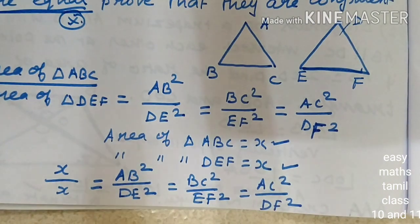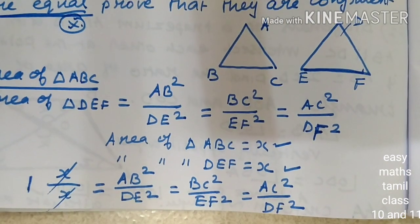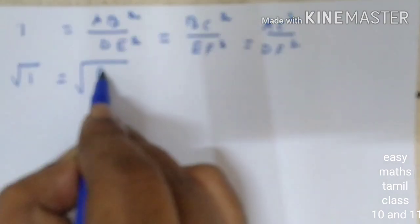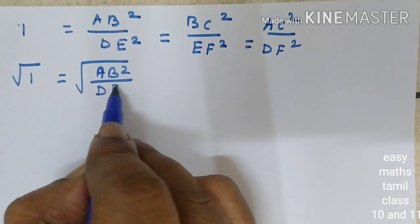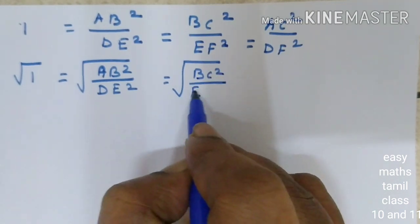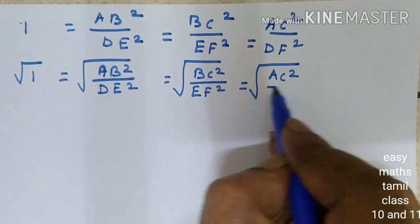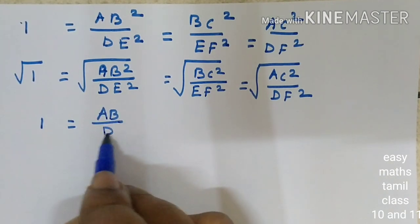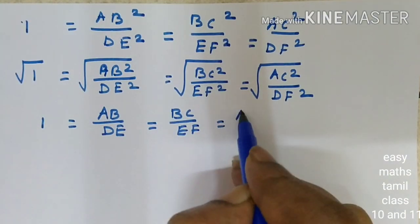So, X and X cancel out. The left-hand side value is 1. Therefore: 1 equals AB squared over DE squared, equals BC squared over EF squared, equals AC squared over DF squared. Taking square roots: 1 equals AB over DE, equals BC over EF, equals AC over DF.